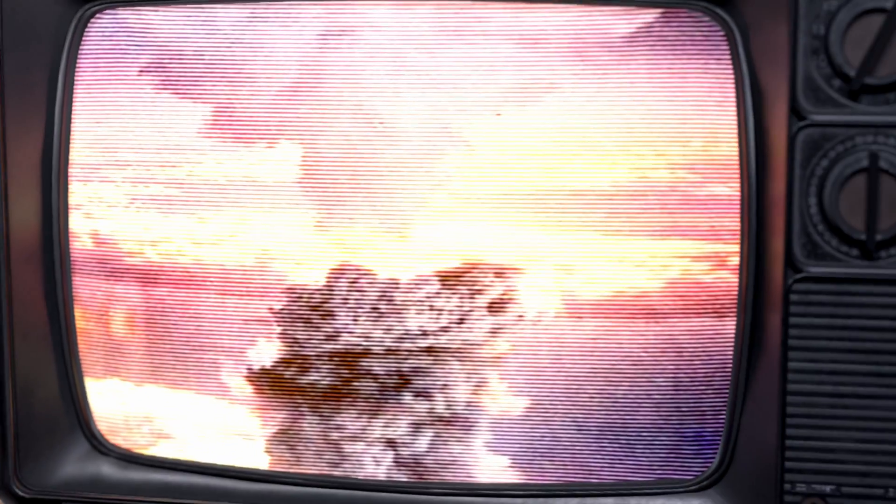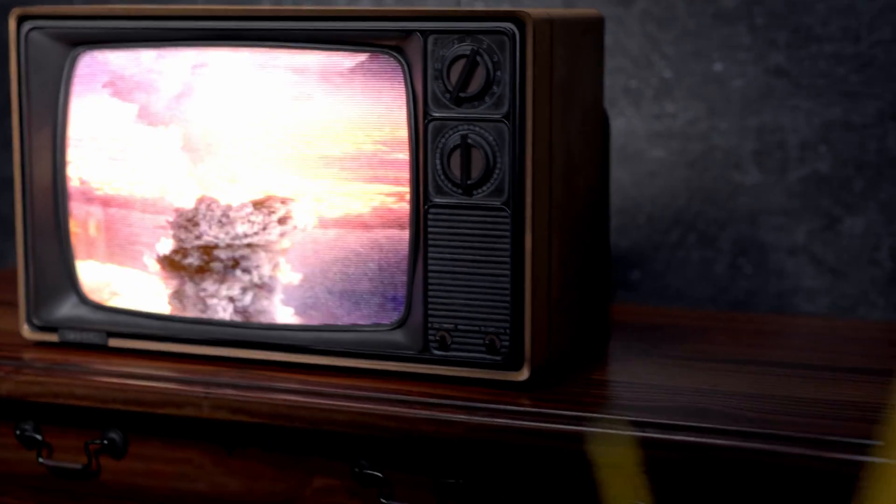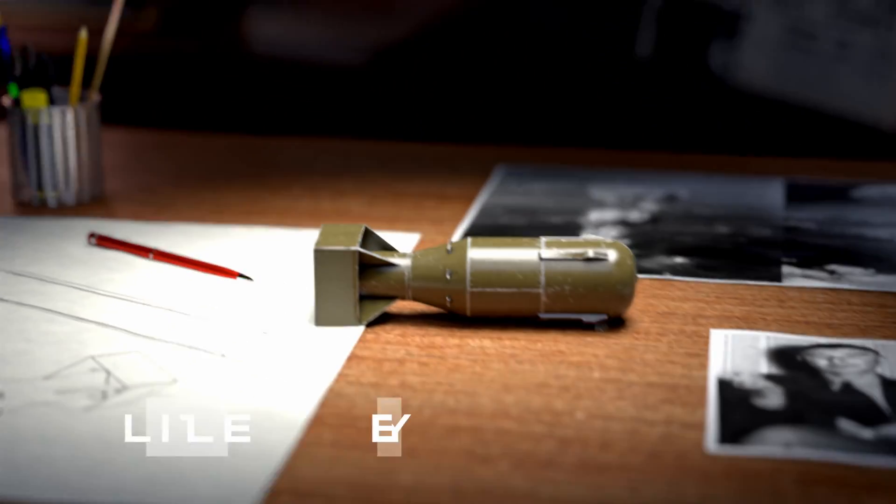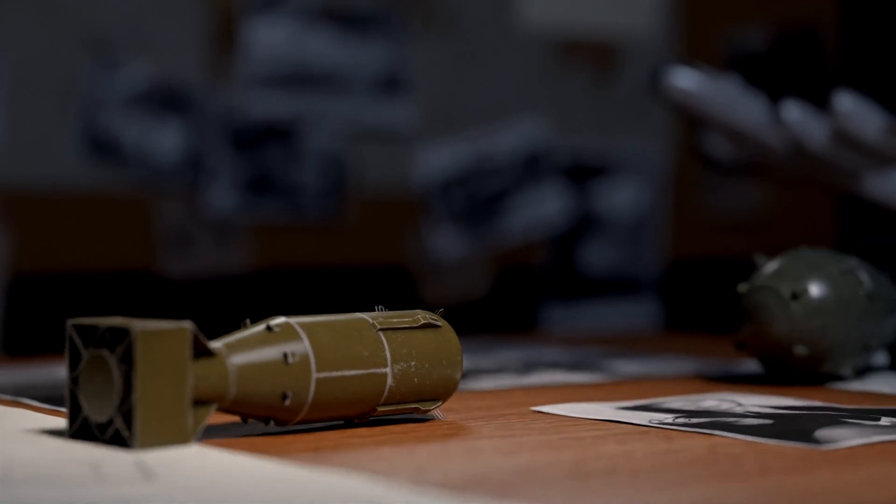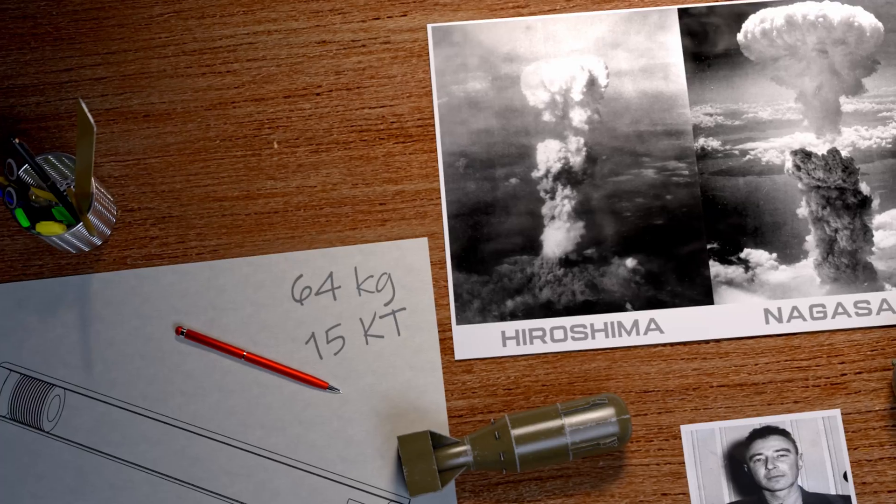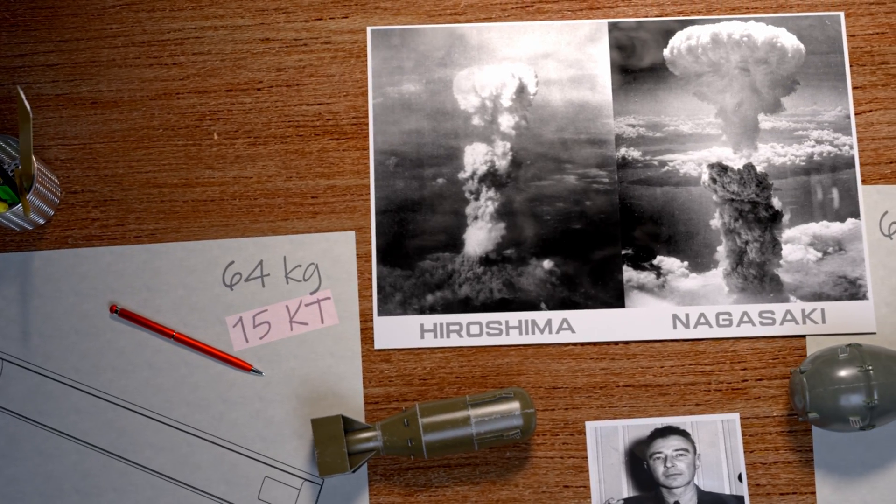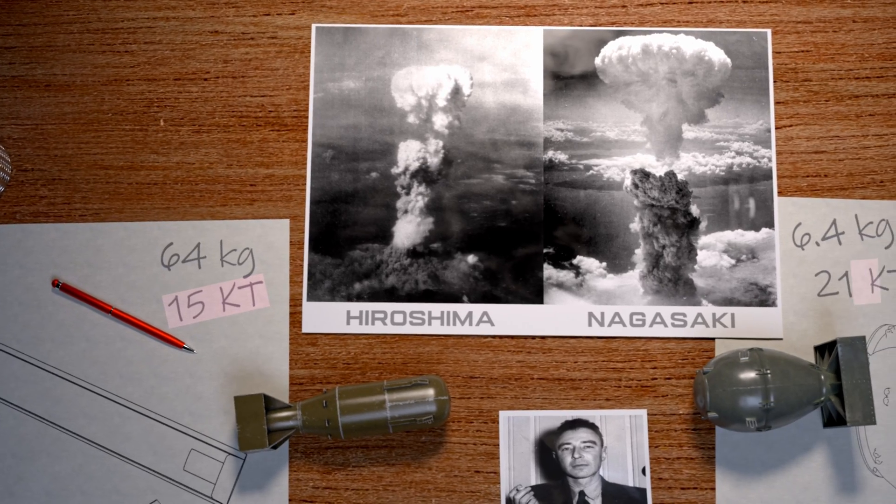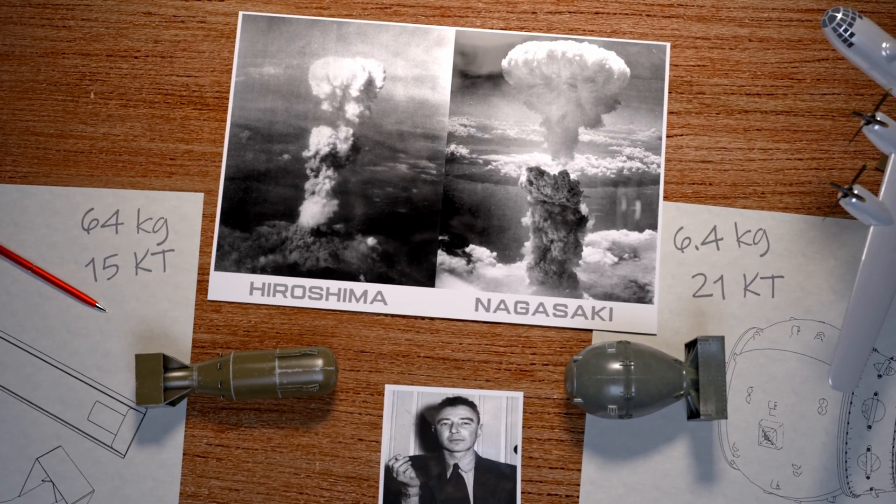This is the second nuclear bomb used by the USA. The first one dropped on Hiroshima was called Little Boy. Little Boy is a failure compared to the Fatman. With Little Boy, only 15 kilotons of energy is released, whereas Fatman released 21 kilotons of energy with 10 times less fission material.